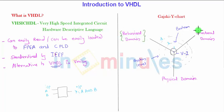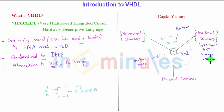The next one is the structural domain. The structural domain suggests the structure, which is the interconnection between transistors, resistors, or whatever technology is used — it may be TTL logic, RTL logic, CMOS, or PMOS logic. So the structural domain describes the interconnection between various components, which can be resistors, transistors, CMOS, PMOS, or logic gates.